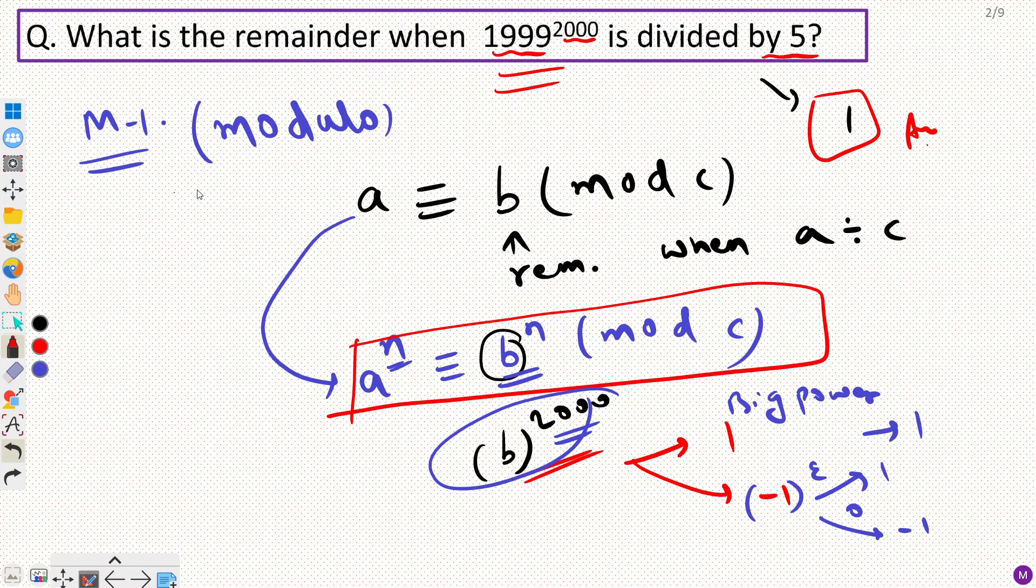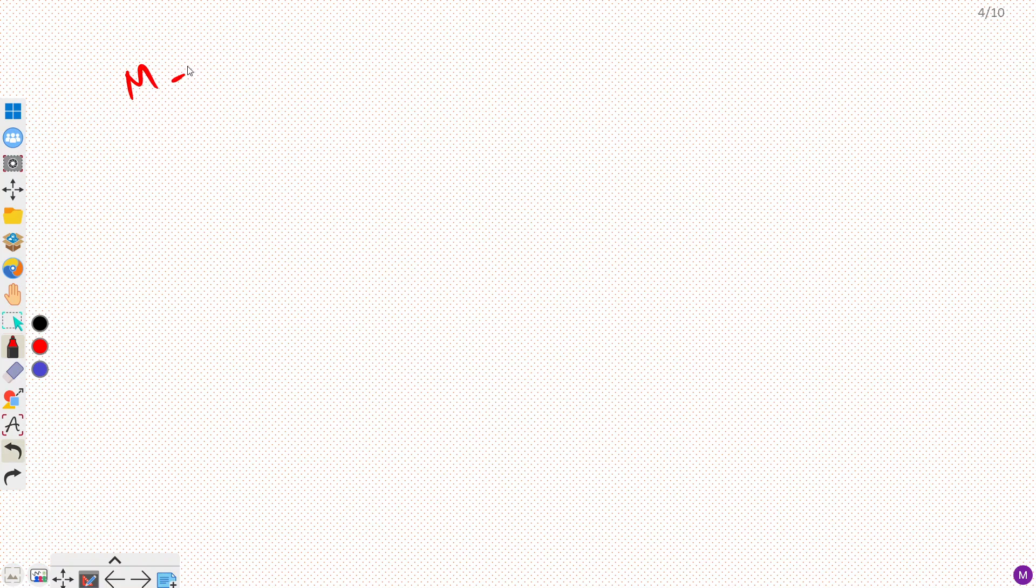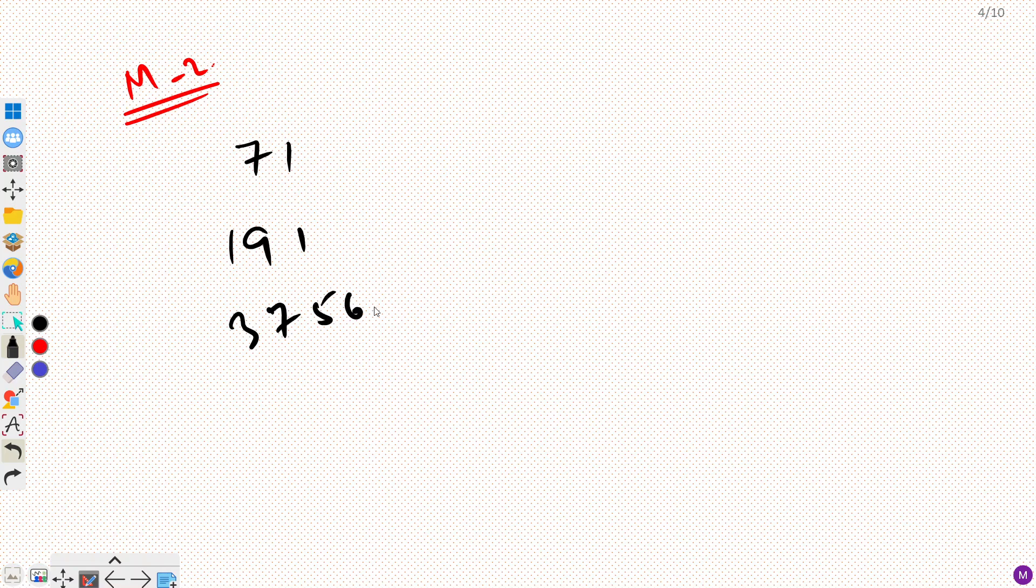Now this was the first method, now let's check the second method. In method 2 we will use a property when you divide by 5. So let's say I take here some numbers 71, 191, 37561. Now in all such cases when you divide by 5 note down your remainders here.